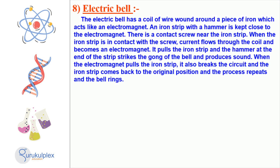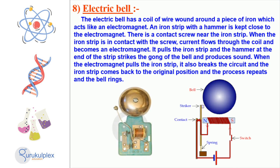Electric bells are a common fixture in everyday life, serving as doorbells, security alarms, and more. They are composed of a coil of wire wound around a core of iron, known as an electromagnet, and an iron strip connected to a hammer positioned close by. When current from the contact screw flows through the coil, it creates an electromagnetic force that pulls the strip and hammer in, causing them to strike the gong and produce sound. After the hammer strikes the gong, the circuit is broken and the strip returns to its original position, ready to repeat the process. The versatile electric bell has become an important part of modern life, with numerous applications.